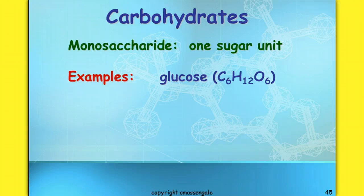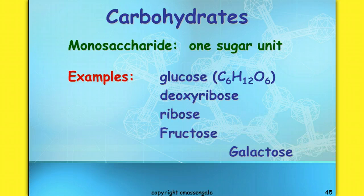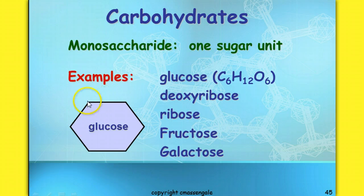An example of a monosaccharide is glucose, with the chemical formula C6H12O6 — this is a formula you'll need to remember, as we use it a lot in biology. Other examples include deoxyribose, ribose, fructose, and galactose. When we look at the structure of glucose, those six carbons form what's called a carbon ring, with carbons at positions one through six.